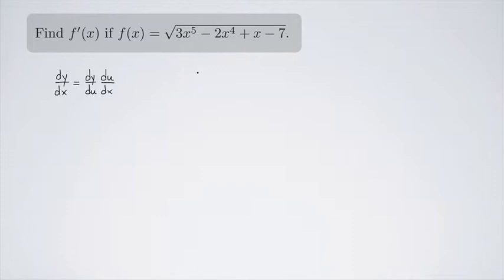And in this case, it's pretty easy to see that the polynomial is the inside function and this square root is the outer. In fact, if you want, it might help to rewrite this as 3x to the 5th minus 2x to the 4th plus x minus 7 all to the 1 half power.